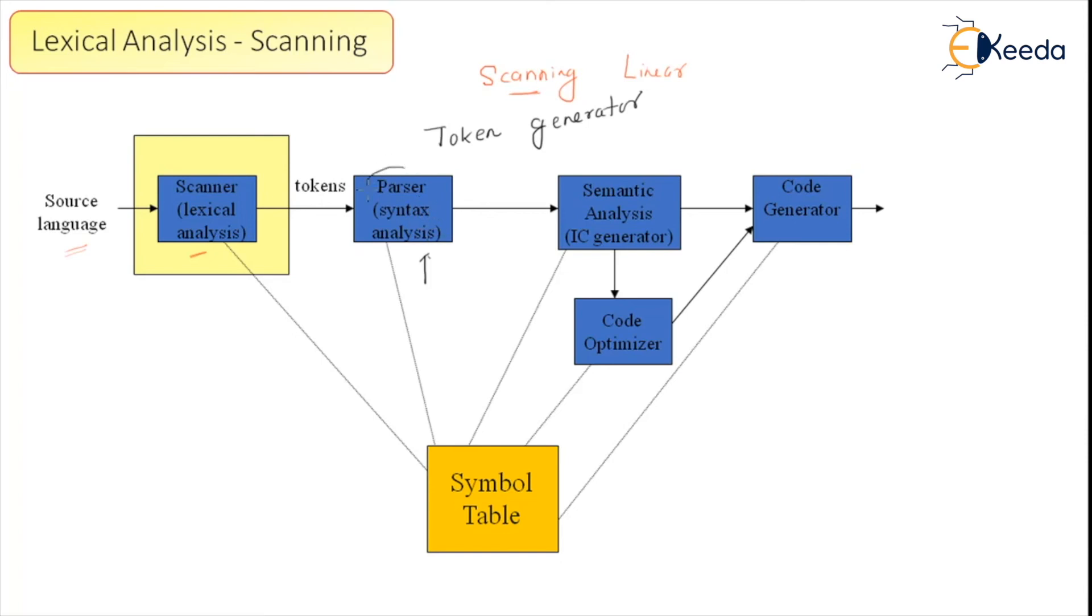The symbol table, I already told you, is a data structure to maintain variables and their attributes. We are not going into semantic analysis or intermediate code generator. That's all for this section, thank you.